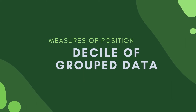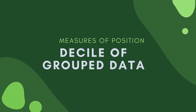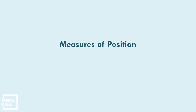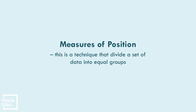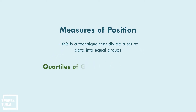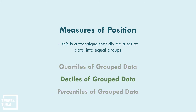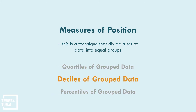Our lesson is about measures of position — deciles of grouped data. Measures of position is a technique that divides a set of data into equal groups. Last time we discussed quartiles of grouped data; right now we will discuss deciles of grouped data.